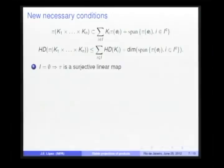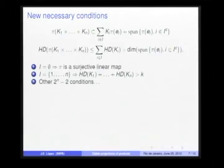Then, in order to give a positive answer to the main question, we get some necessary conditions. For instance, when I is the empty set, we recover the surjective condition. When I is the total set of indices, we recover the usual condition. And there are another 2ⁿ minus 2 conditions, necessary conditions in order to give a positive answer to the main question.